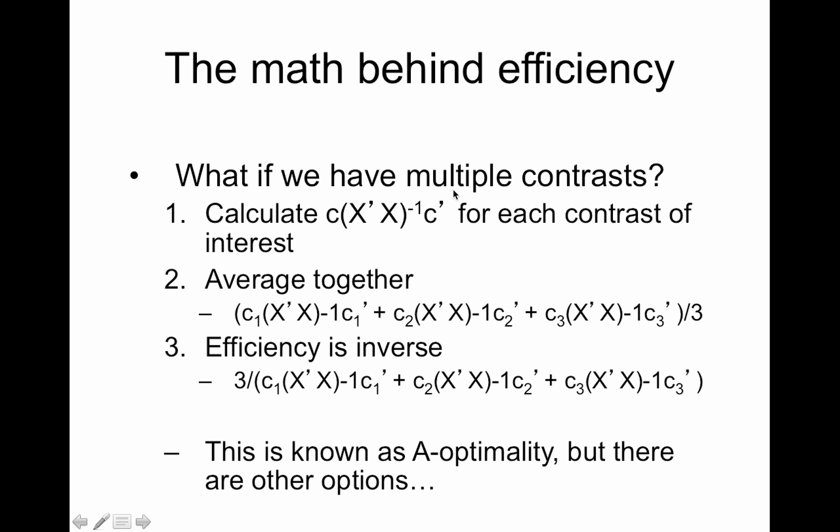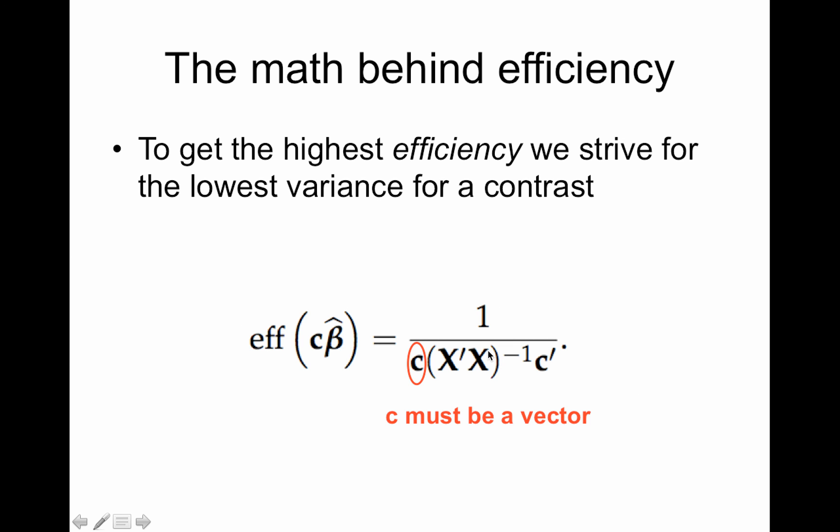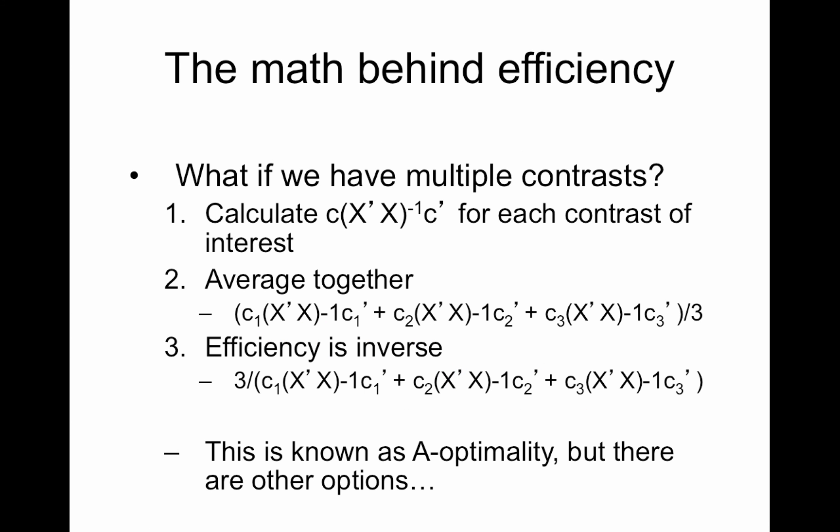So you would calculate, if you have multiple contrasts, which is likely going to happen, you could calculate this efficiency for each one, but then what do you do? So you could calculate C times X transpose X inverse C transpose for each contrast of interest. And I'll just tell you a really common mistake that I make just about every time I code this up from scratch is I forget to invert this. Don't forget to invert this. Otherwise you'll be confused why your efficiency is not improving. Okay, so what you can do then is average them together. So you would just take the sum divided by three if you had three contrasts of interest. And then you could use the inverse of that as your efficiency.